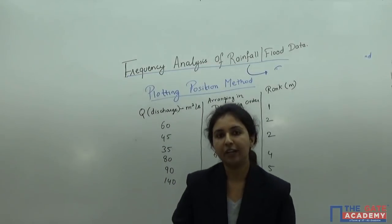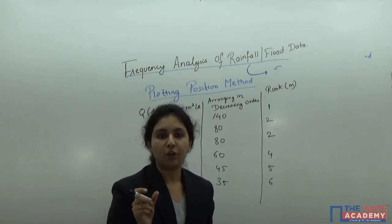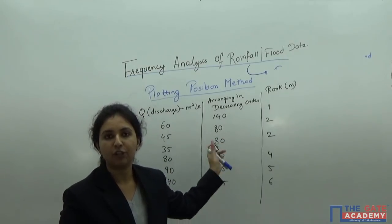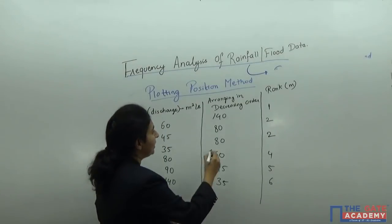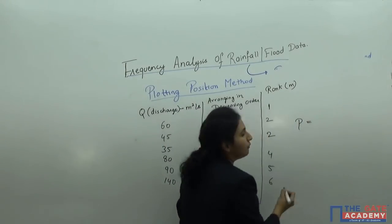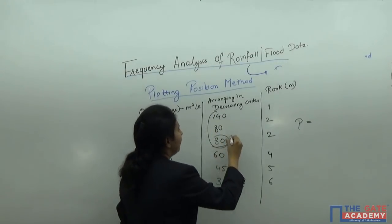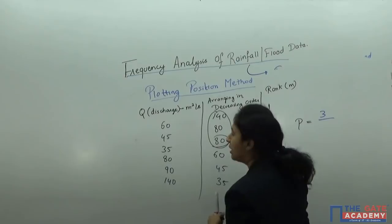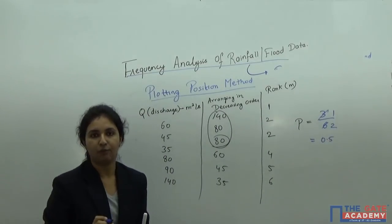Now, if I ask you to calculate the probability of 80 m³/s being equaled or exceeded: probability equals favorable divided by total. The values equal to or exceeding 80 are: 140, 90, and 80 — three values. So probability equals 3 divided by 6 (total), which equals 0.5. That is how you calculate probability.